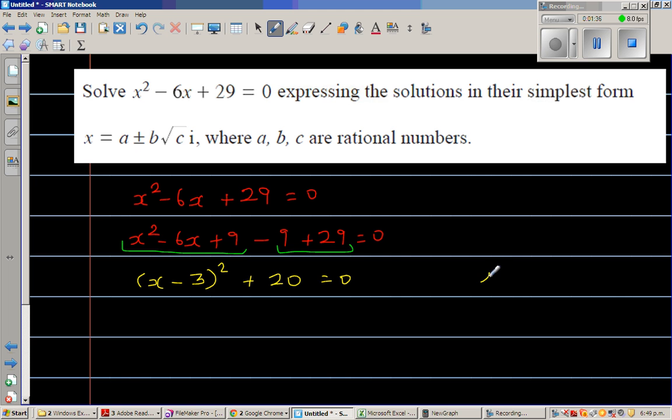By definition, if you learn complex numbers, i is the square root of negative 1, so i² is negative 1. The next step, I'm going to write this as (x - 3)² minus 20 times negative 1 equal to 0.